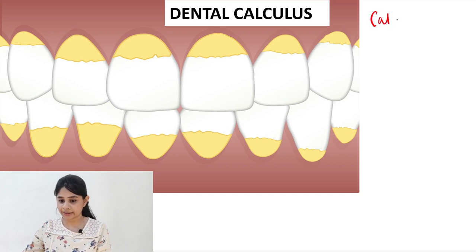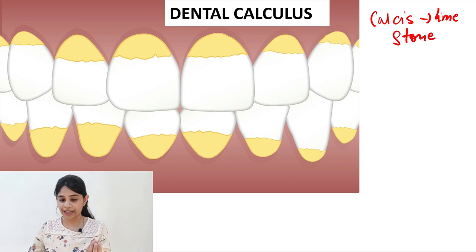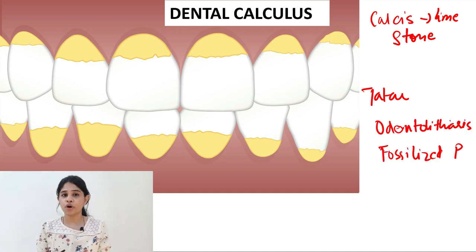So the term calculus is derived from Greek literature where calcis means limestone. So the calculus has a limestone-like consistency. Now there are other names also given to calculus such as tartar. Now this term was given by a German physician named Paracelsus. And other terms such as odontolithiasis and fossilized plaque can also be used for dental calculus. So this is an important MCQ question and it can also be asked in Viva. So just remember these other terms as well.